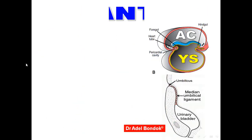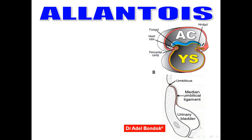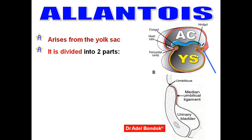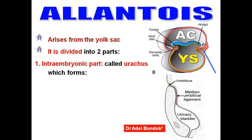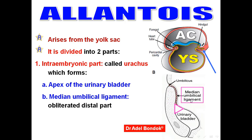The allantois is a diverticulum that arises from the yolk sac. It is divided into two parts: the intra-embryonic part and the extra-embryonic part. The intra-embryonic part is called the urachus, which forms the apex of the urinary bladder. Its distal part obliterates to form a ligament called the median umbilical ligament. The extra-embryonic part, present in the umbilical cord, degenerates.